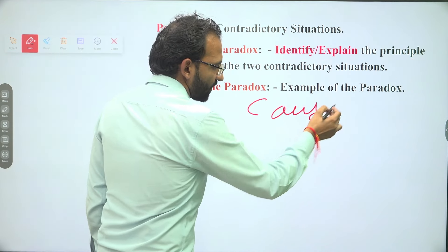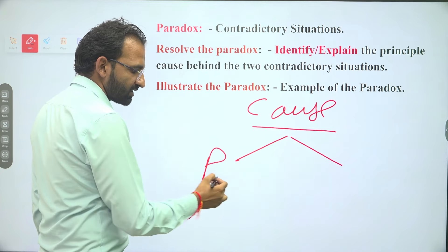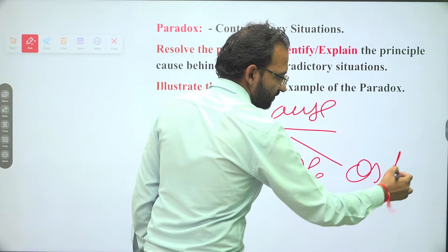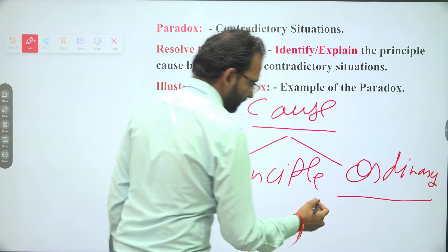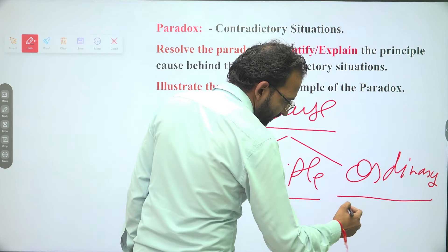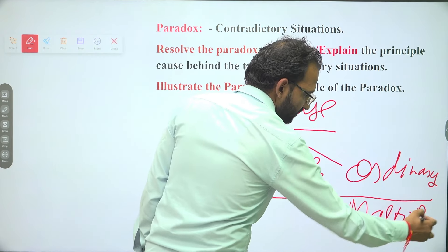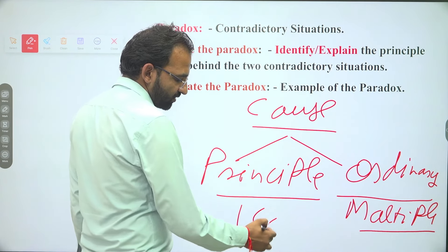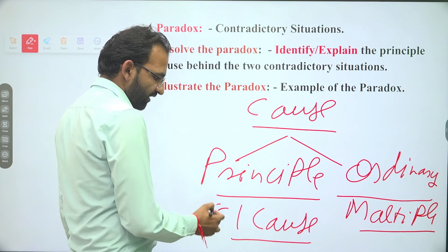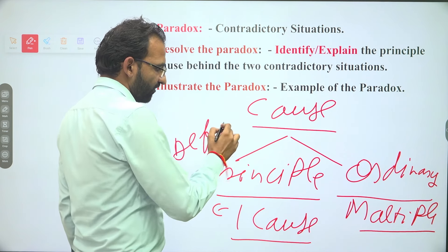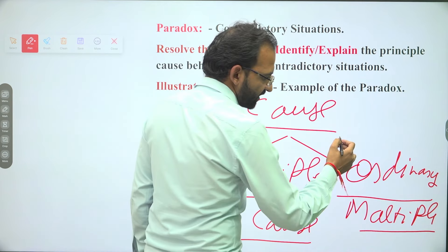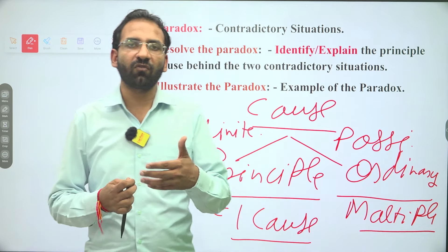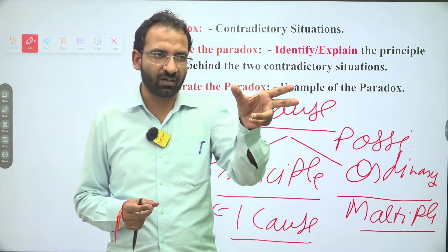There are two types of causes: principle cause and ordinary cause. The ordinary cause means multiple causes can be together — everything is possible. But the principle cause is specific — it is definite, eliminative, with no remaining possibility. Example: if Indian cricket team won the World Cup match, that is an effect.